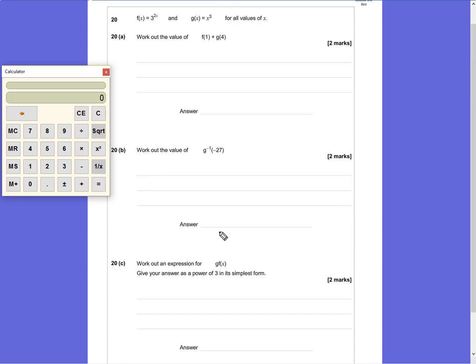Question 20a asks you to work out the value of f(1) + g(4). We're going to substitute 1 into the first formula, 4 into the second formula, and add the results together.